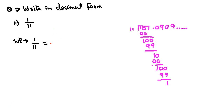So, 1 upon 11 is equal to 0.0909, and so on.